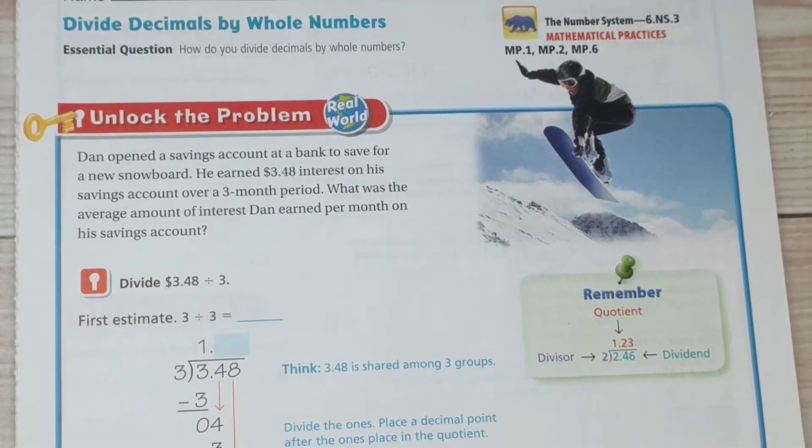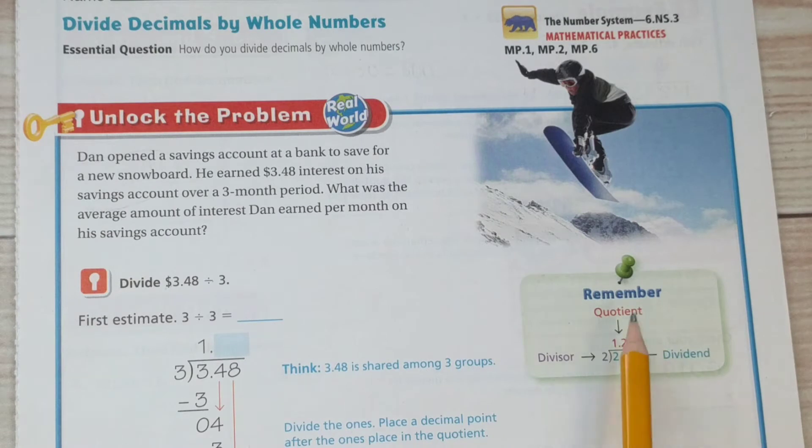Let's remember our vocabulary words real quickly here. Remember the quotient is the answer in a division problem. The divisor is the number going into the dividend. The dividend is what's being broken up into pieces when we're dividing it.